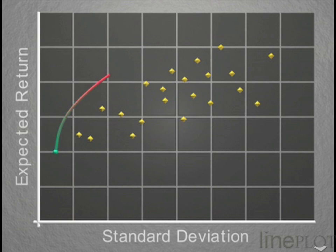The mean variance efficient frontier comprises portfolios which offer the highest expected returns for varying levels of standard deviation.